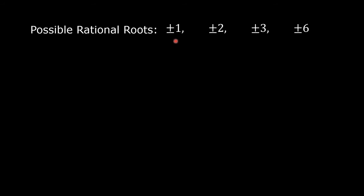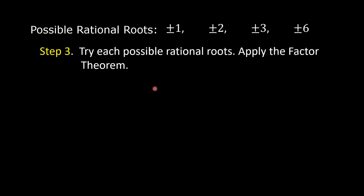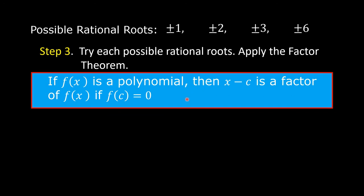These are the possible rational roots: positive and negative 1, positive and negative 2, positive and negative 3, and positive and negative 6. Step 3: try the possible rational roots — apply the Factor Theorem. The Factor Theorem states that if f(x) is a polynomial, then x - c is a factor of f(x) if f(c) = 0.